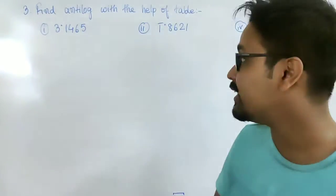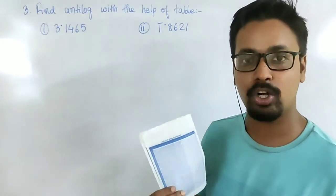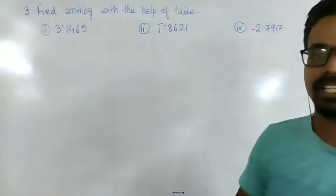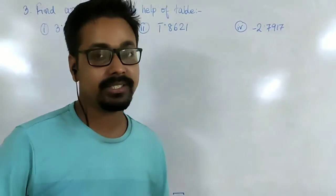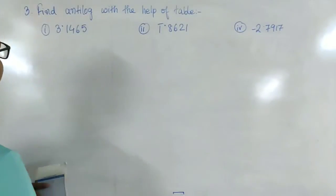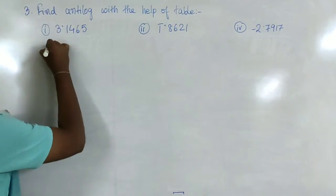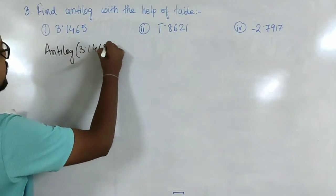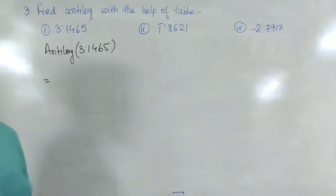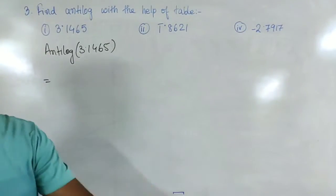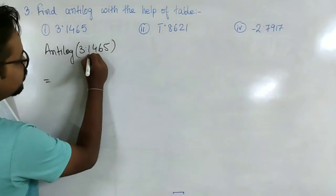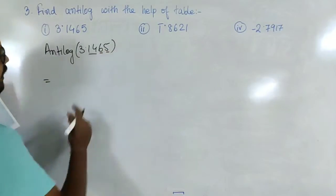For Question 3, we need the antilog table to find the antilog of given values. We want to find the antilog of 3.1465. The 3 is the characteristic, and we need to find the antilog of the mantissa 0.1465. We split the mantissa into parts: 0.14, then digit 6, then mean difference 5.